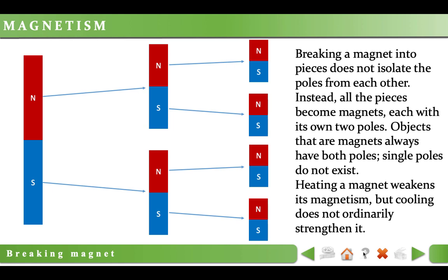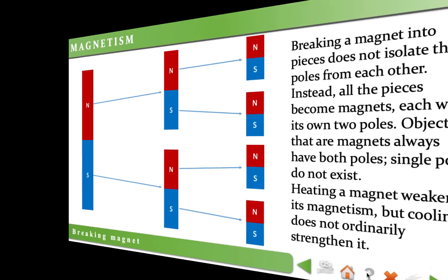Heating a magnet weakens its magnetism and at some point, a magnet loses its property but cooling does not ordinarily strengthen it.